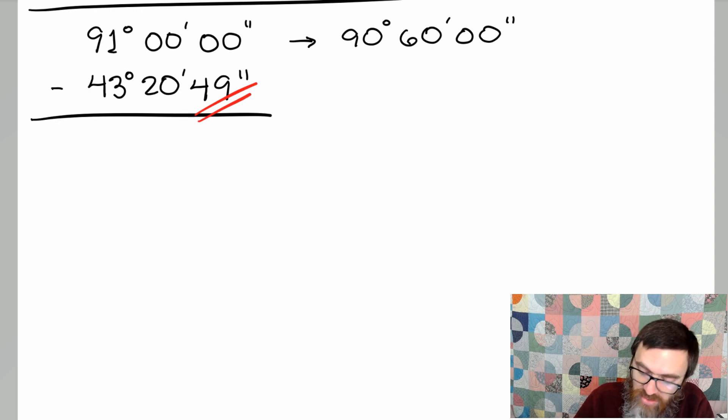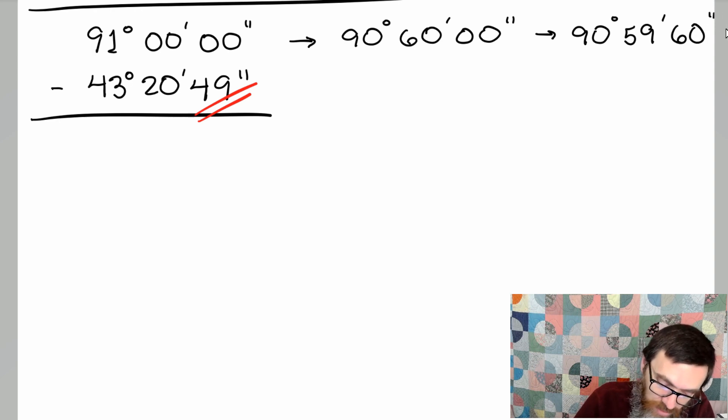What we're going to do is we're going to make a conversion within 91 degrees. So this 91 degrees can become 90 degrees. That's going to give us 60 full minutes, but we're still going to have zero seconds. We can see that's going to be a problem because of this 49 seconds that I have right there. So that means I need to do regrouping yet again. So this becomes still 90 degrees. I'm going to take one of those minutes, so it becomes 59 minutes, and that's going to be enough to give me 60 seconds. And so now I can do the subtraction here.